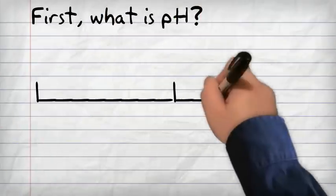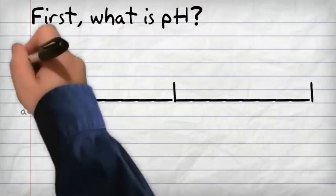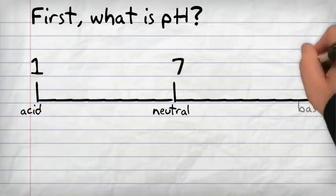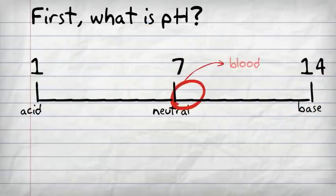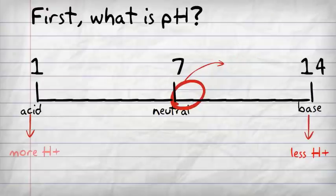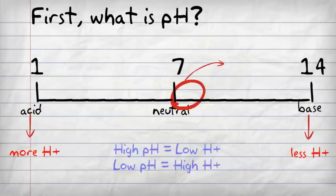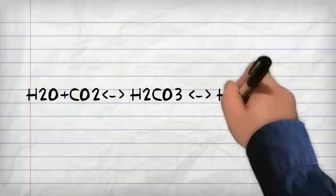First, let's talk about what pH is. It's a scale from 1 to 14 — 1 being acidic, 14 is basic, and your blood is just about 7. If you're basic, you have less hydrogen ions, and if you're acidic, you have more hydrogen ions. So a high pH is a low hydrogen ion concentration, and a low pH is a high hydrogen ion concentration.